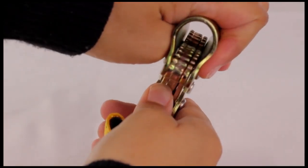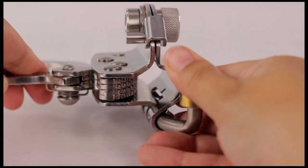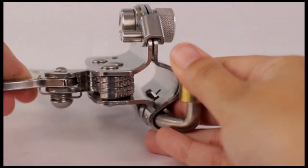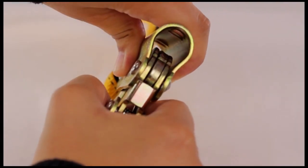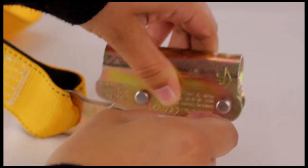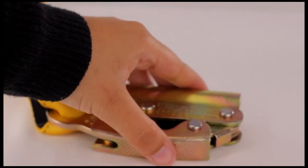Check the internal cams. They should have a visible serrated face. Do not use a rope grab with worn serrations. Tag and remove it from service. Record the inspection date and findings into the inspection log.